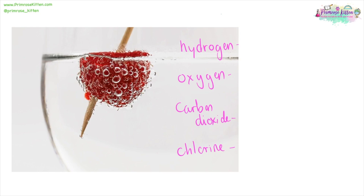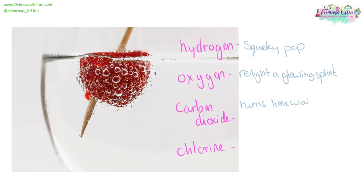In an experiment, when you see bubbles coming off something, it's going to be one of these four types of gases: hydrogen gas, oxygen gas, carbon dioxide, or chlorine gas. To test for hydrogen gas, it gives a squeaky pop. To test for oxygen gas, it will relight a glowing splint. Carbon dioxide turns lime water cloudy. And chlorine gas will bleach damp litmus paper.